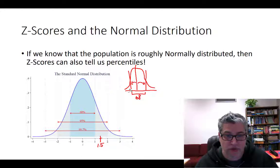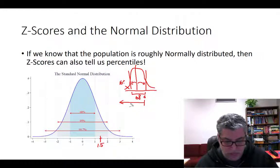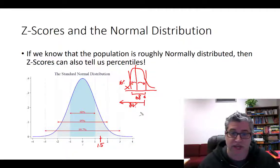So, 32% split left and right means that 16% are in each tail. And so, the percentile for one standard deviation above the mean is 68 plus the 16%, which is 84%, right? 16 plus 68.